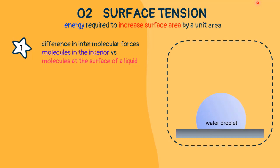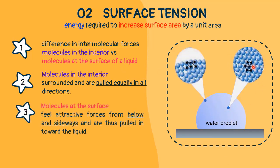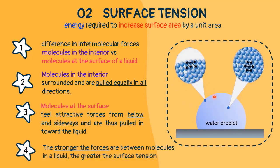Let's look at the mechanism of water droplets. When using a water dropper, the water does not flow in a continuous stream, but rather in a series of drops. The shape of the drop is caused by the surface tension of the water. The only reason the drop of water isn't completely spherical is that the force of gravity is pulling down on it. Molecules in the interior are surrounded and pulled equally in all directions, while molecules at the surface feel attractive forces from below and sideways, and are thus pulled towards the liquid. Therefore, a liquid surface tends to have the smallest possible area.